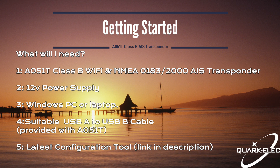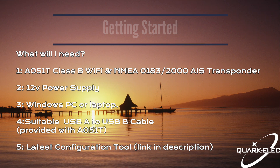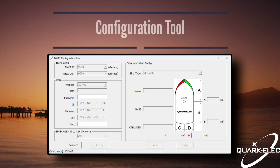Getting started is easy. First, download the configuration tool through our website on a Windows PC. Ensure your AA51T is connected to a 12V power supply and connect it to your PC using a USB-A to USB-B cable. Upon launching the configuration tool, you'll be shown the default settings.